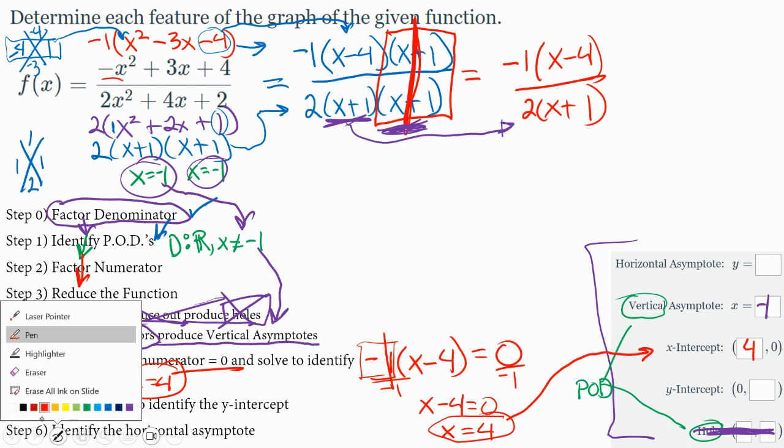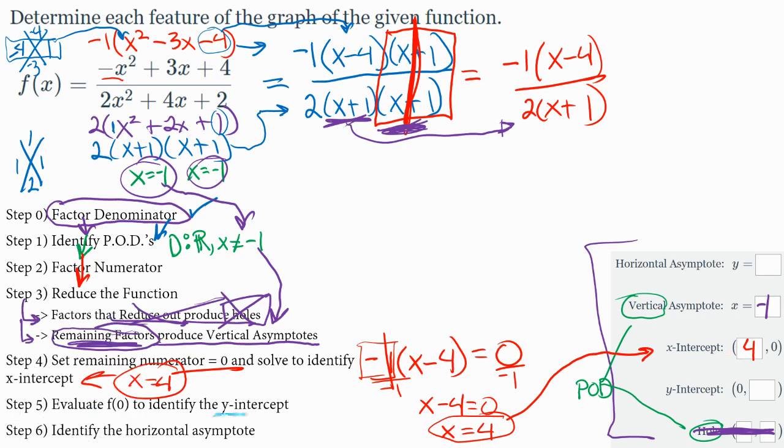And then step 5, we need to identify the y-intercept. And we do that by plugging in f of 0. Now when I say plug it in, we should be plugging into the reduced version, not the original one. So we should be going right here, and this is f of x reduced. And we want to plug a 0 in here. So we want to make this f of 0 be negative 1 times 0 minus 4 over 2 times 0 plus 1. And you work that out. The top's going to be a positive 4, the bottom is going to be a 2.